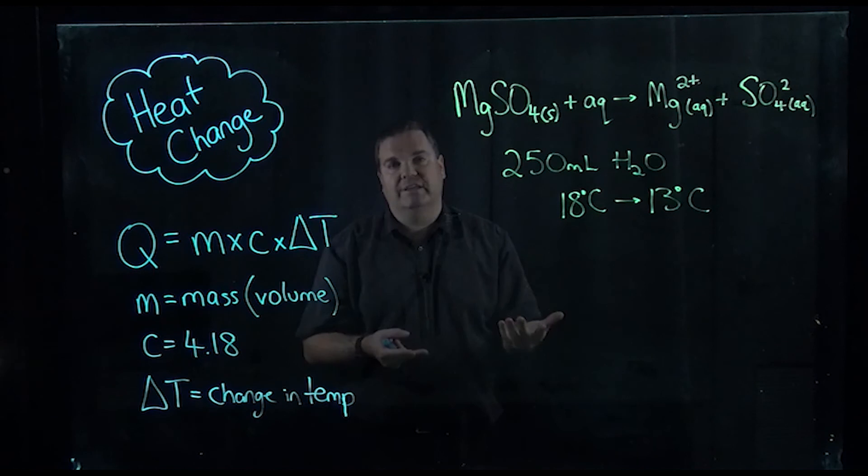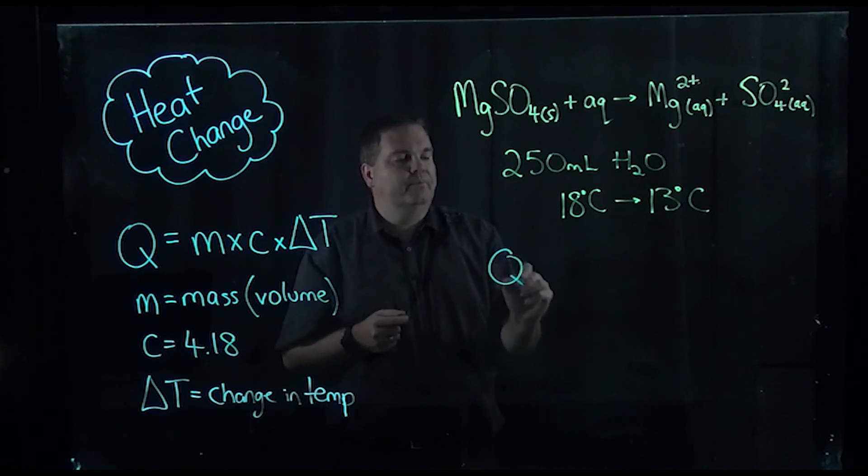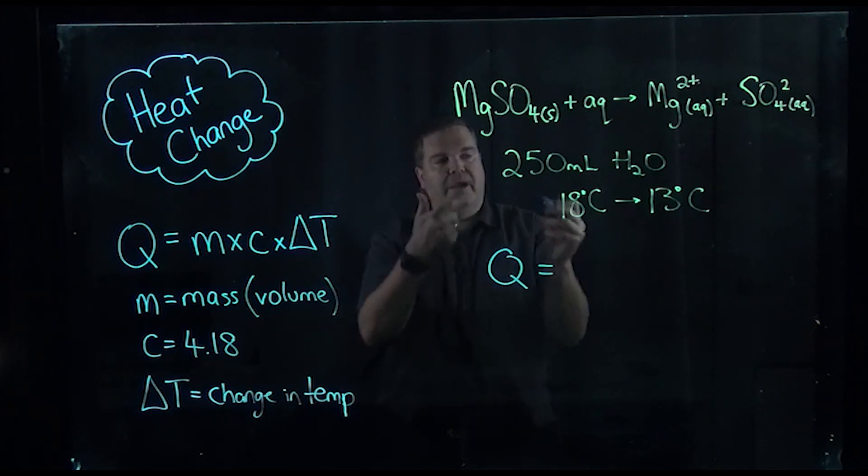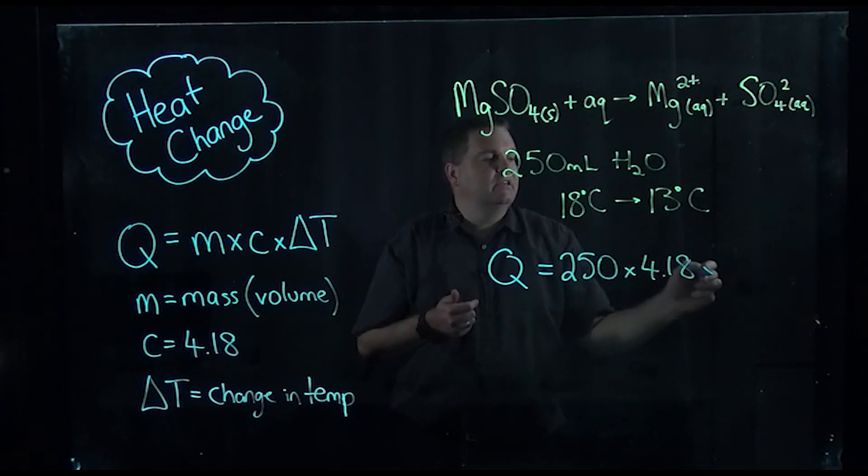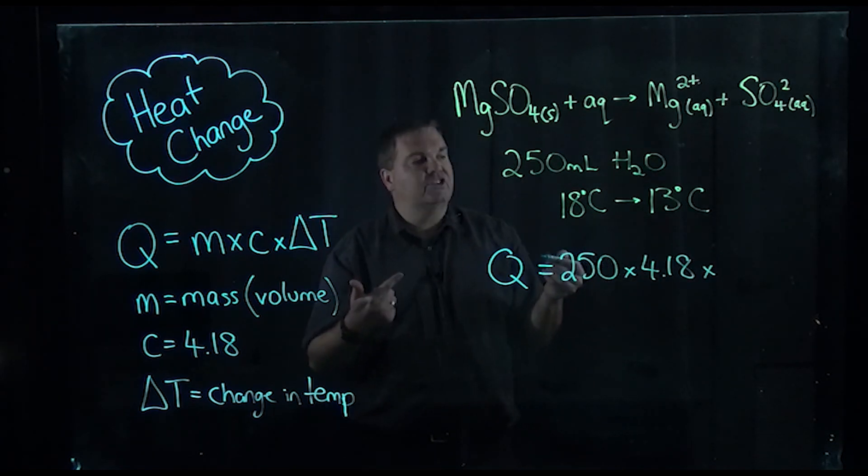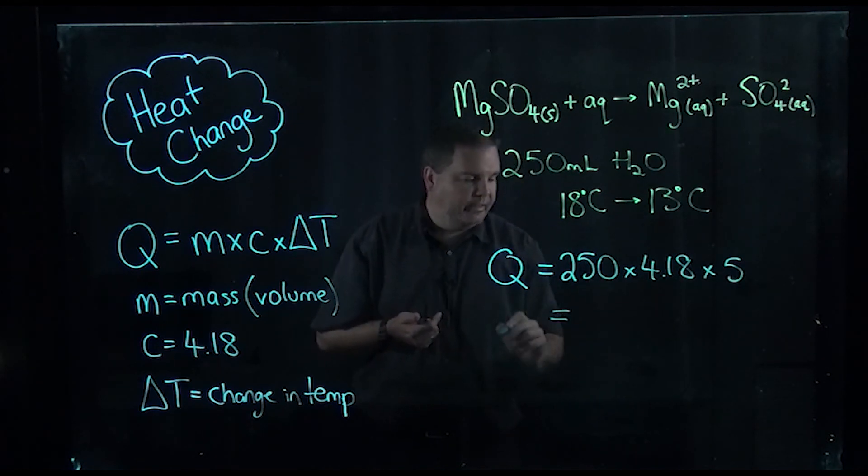And then the energy that's given out by these being hydrated or surrounded is less, and so overall more energy is taken from the surroundings or from the water, which is why the water gets cooler. So in order to calculate Q, we need the mass which is 250, we times it by our constant of 4.18, and we times it by our change in temperature which is in this case five degrees.